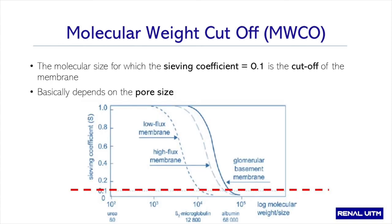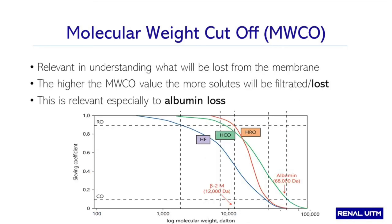Molecular weight cutoff is a simple concept: the molecular size for which the sieving coefficient equals 0.1 is the cutoff weight of the membrane, and it basically depends on the pore size. The higher the cutoff, the more molecules can be removed. The molecular weight cutoff or MWCO is relevant in understanding what will be lost from the membrane.